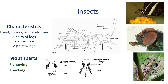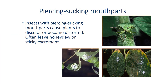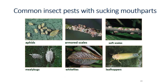Piercing-sucking insects, like the stink bug pictured here, have tubular mouthparts that they insert into the plant to suck up plant sap. Insects with these types of mouthparts cause leaves to curl or discolor. They often leave honeydew or sticky black excrement spots. They do not chew holes in leaves or other plant parts. There are many types of insects with sucking mouthparts.